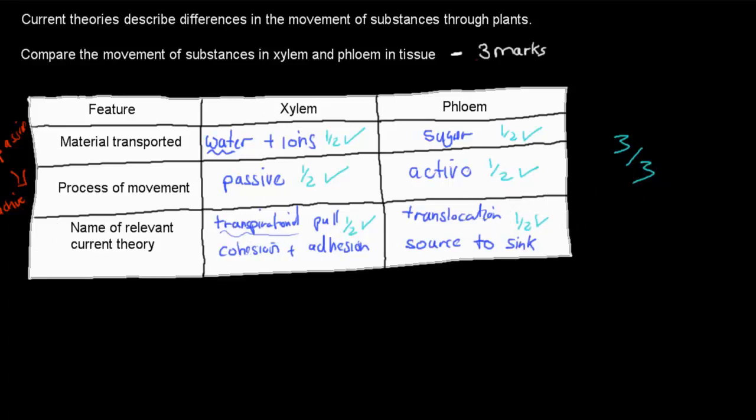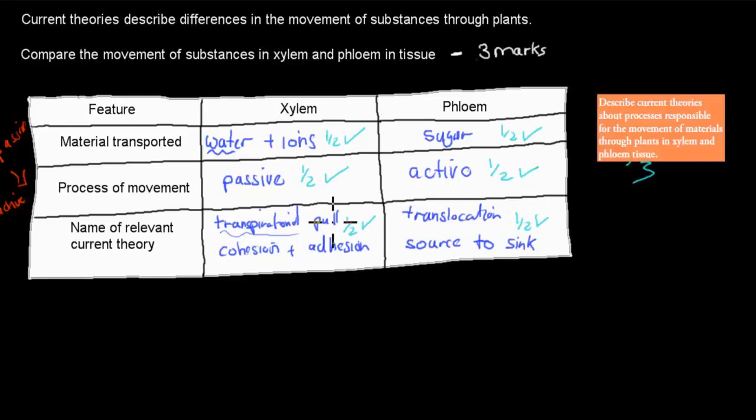And where does this question come from? It comes from this dot point. So first of all, it says describe current theories. We need to know the current theory because it says in the dot point current theories—we need to know whatever they are for xylem and for phloem.